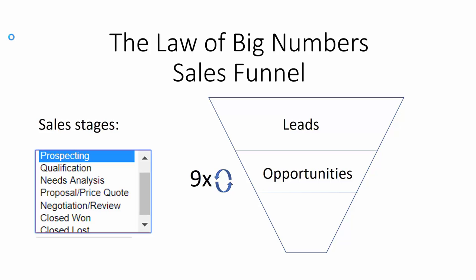On average, we have to go through this nine times, which means nine contacts with our opportunities, in order to find out whether there is a deal won or a deal lost.